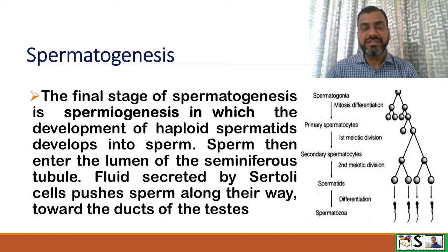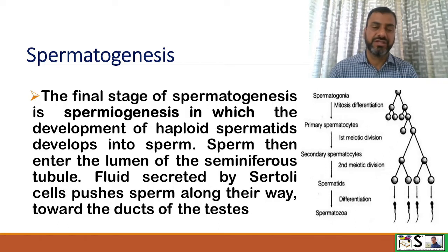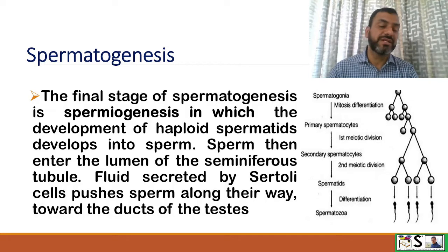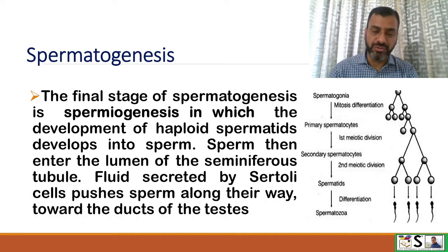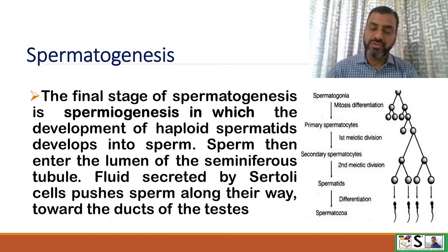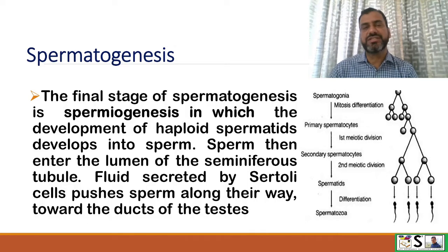The final stage of spermatogenesis is spermiogenesis, in which the haploid spermatids develop into mature sperm. The sperm then enter the lumen of the seminiferous tubule. Fluid secreted by Sertoli cells pushes sperm along towards the ducts of the testes, and maturation of sperm continues.